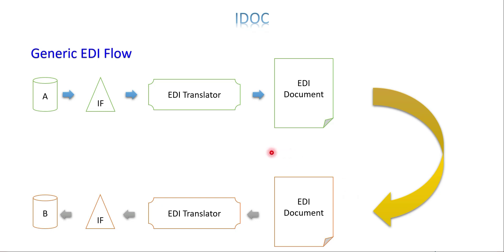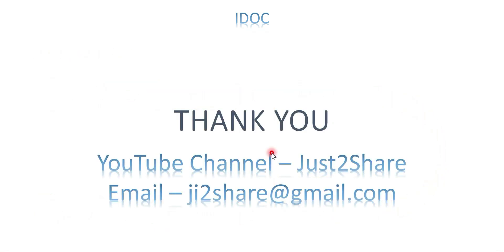So EDI acts as a layer between the IDOC you generate and your target system. This was a very high-level overview of ALE and EDI to help you understand which technology to prefer in regular development. Hope this gave a little idea about ALE and EDI. Maybe in future videos, if time permits, we can look at how an EDI format looks and how to read it. If you have any doubts, please let me know. Thank you so much for your time. See you in the next video, bye.